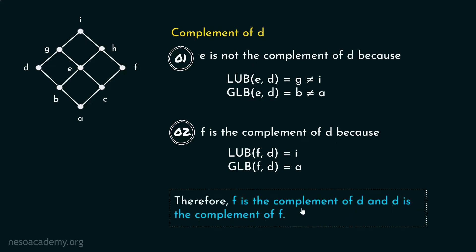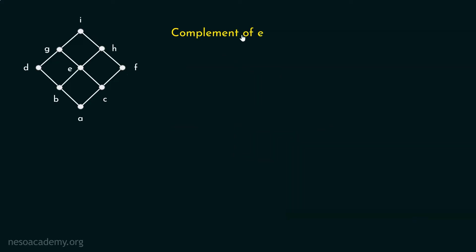Therefore, F is the complement of D and D is the complement of F. It is clear that these two elements have complements. Now let's find the complement of element E, which is in the middle of this particular lattice.